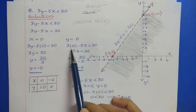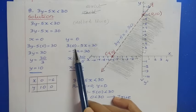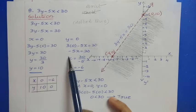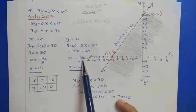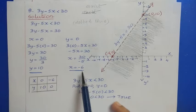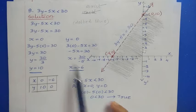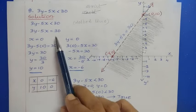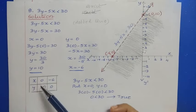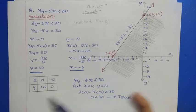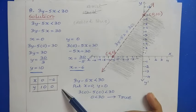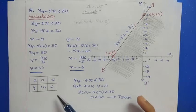Putting y = 0 gives -5x = 30, so x = -6. We now have two solutions: (0, 10) and (-6, 0). To draw the line, we check the inequality type: 3y - 5x < 30 is a strict inequality, so we use a dotted line.